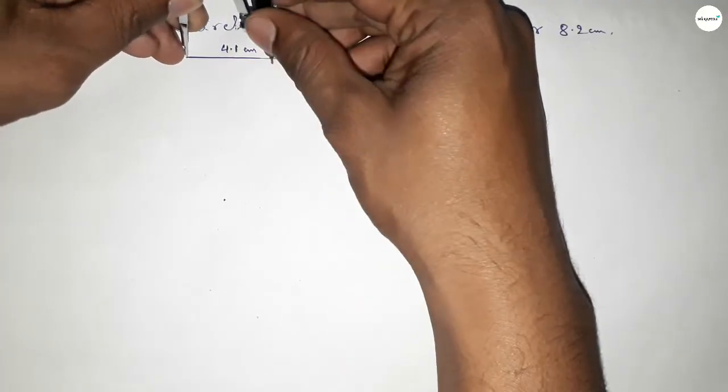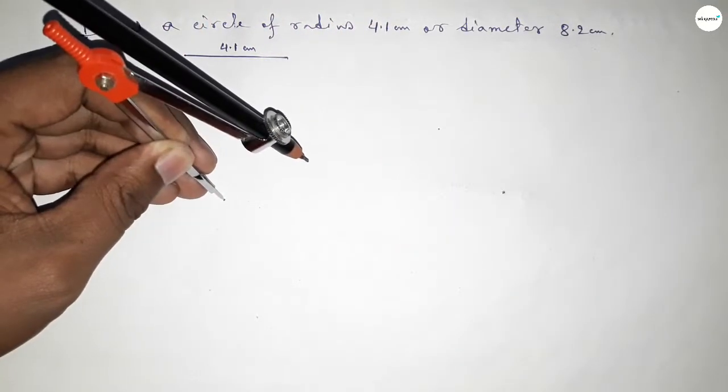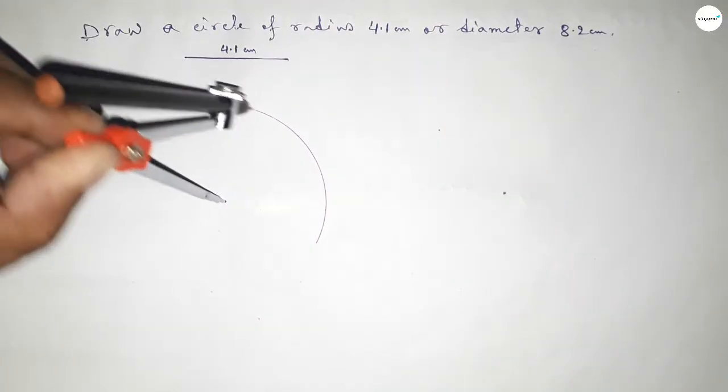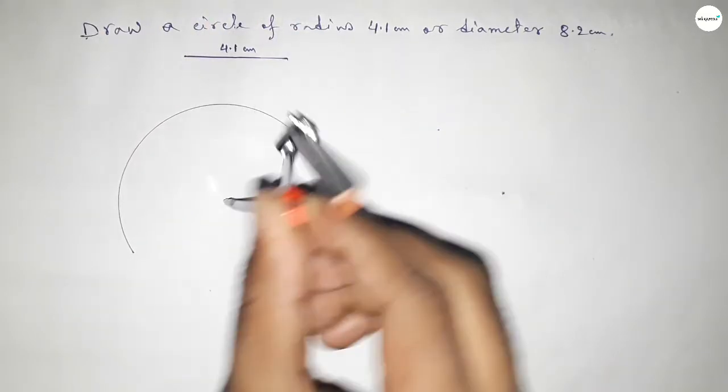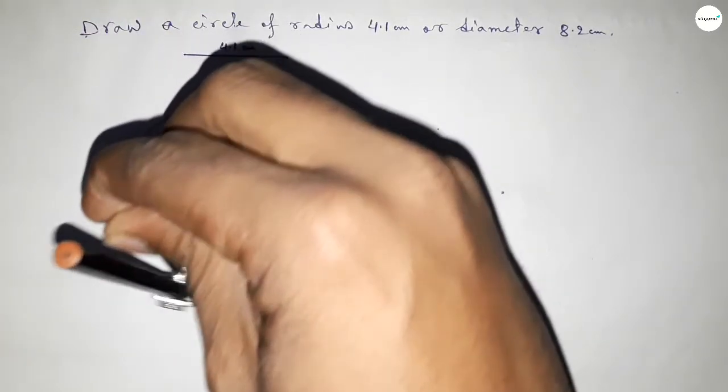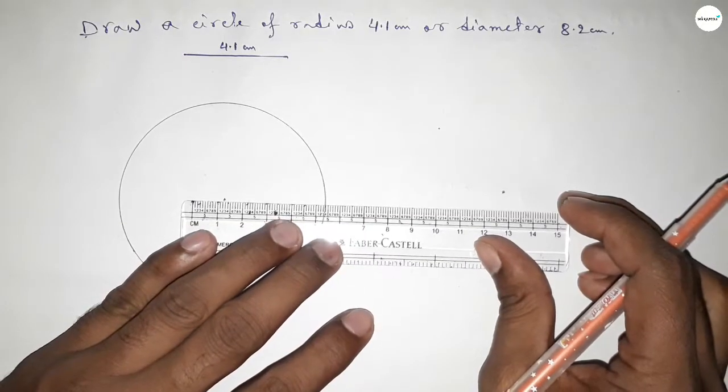Length 4.1 centimeter by using compass. By this way, putting the compass on this point and drawing an arc, which represents a circle with radius 4.1 centimeter.